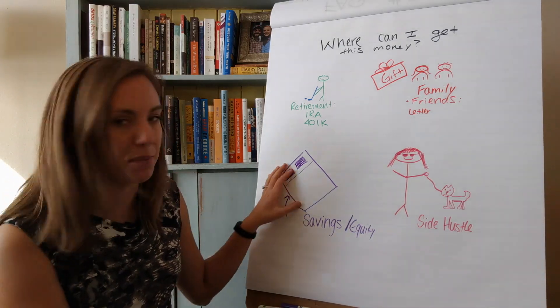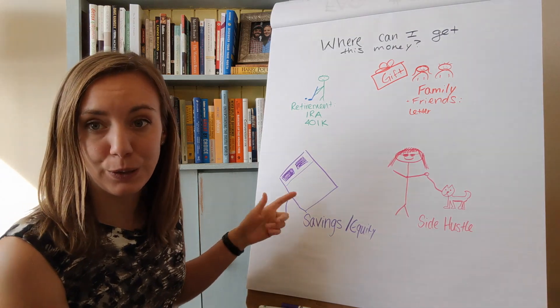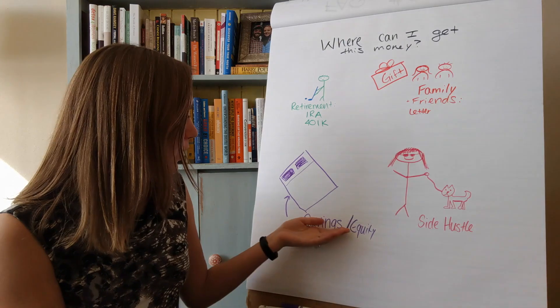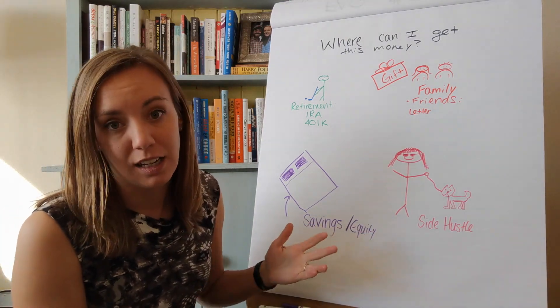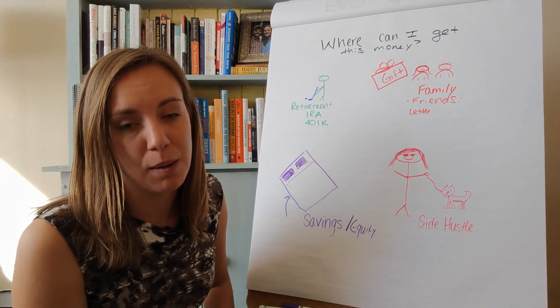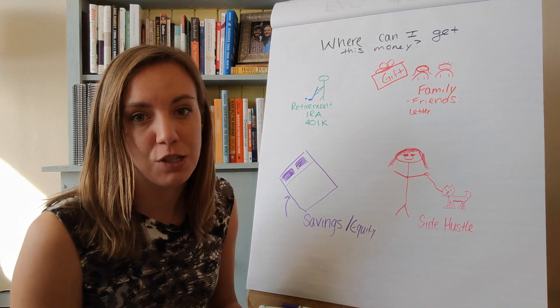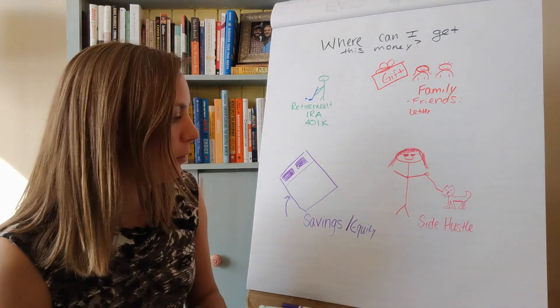This is a mattress by the way, and I'm pointing to under the mattress. You can use your savings - if you have liquid savings, you can definitely use that for your down payment. I've also seen a lot of clients pull equity out of stock, so if you have some kind of compensation package with your work that gives you stock options, you can pull some of that equity out and use that for a down payment as well.